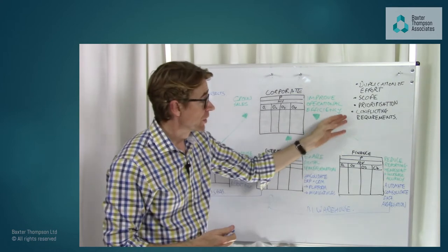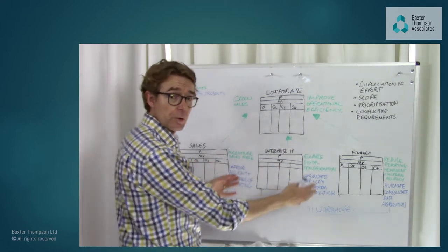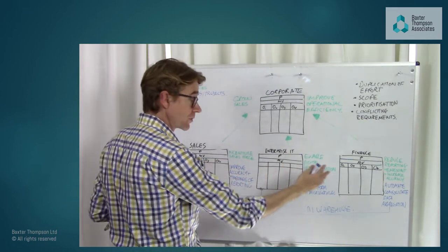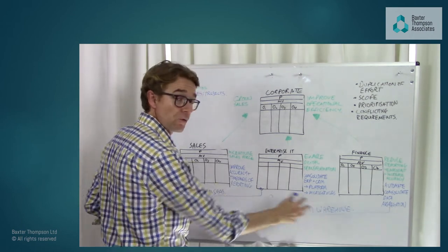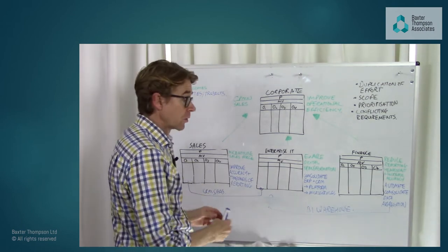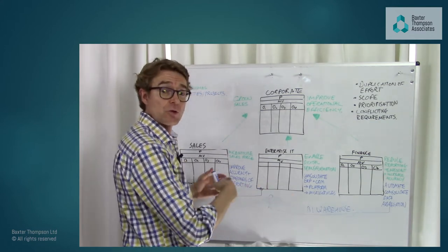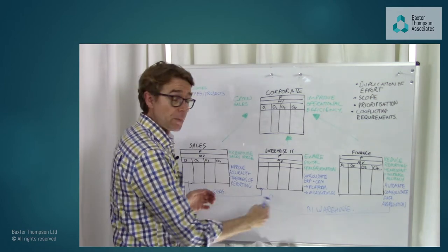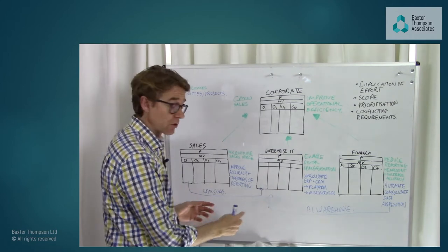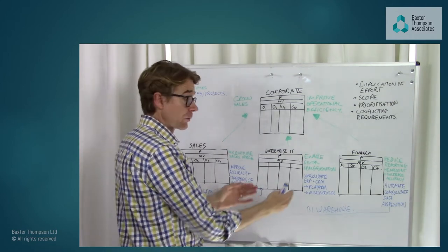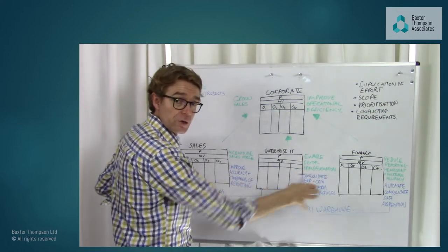Issues of scope, prioritisation, and conflicting requirements emerge. If there are dependencies upon enabling organisations to deliver this, and there's only one set of resources who may be called upon to deliver both solutions — which one goes first? There may be a missed opportunity to say: actually, there could be one system which delivers both things. Can we deliver that first and then add the functionality to satisfy other departments?